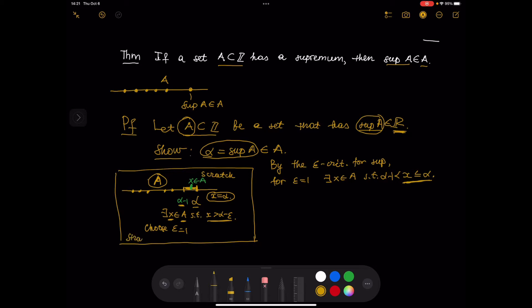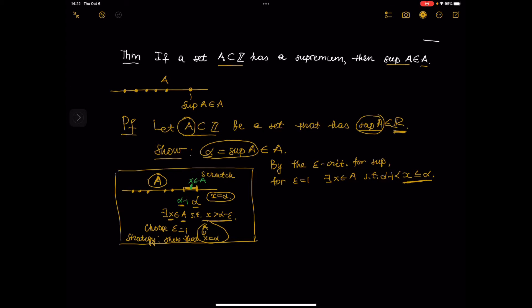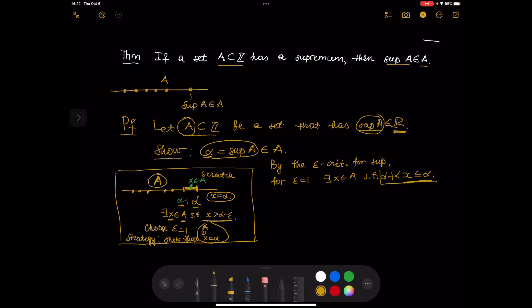Our strategy is to show that x is equal to alpha. Since x is an element of A, that would show alpha is an element of A. So in the clean proof: Case 1 — x is equal to alpha. Then because x is an element of A, alpha is an element of A, and we are done, because that's what we wanted to show.